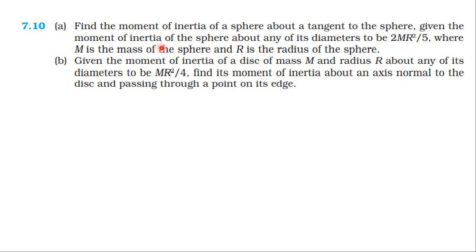From NCERT textbook, topic: System of Particles and Rotational Motion, problem 7.10. Find the moment of inertia of a sphere about a tangent to the sphere, given the moment of inertia of the sphere about any of its diameters to be 2mr²/5, where m is the mass and r is the radius. Second: given the moment of inertia of a disk of mass m and radius r about any of its diameters to be mr²/4, find its moment of inertia about an axis normal to the disk and passing through a point on its edge.